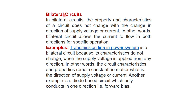In a bilateral circuit, the properties and characteristics do not change with the change in direction of supply voltage or current. A bilateral circuit allows current to flow in both directions for a specific operation. Examples include the transmission line in power systems, whose characteristics remain constant regardless of the direction of supply voltage, and a diode-based circuit which only conducts in forward bias.